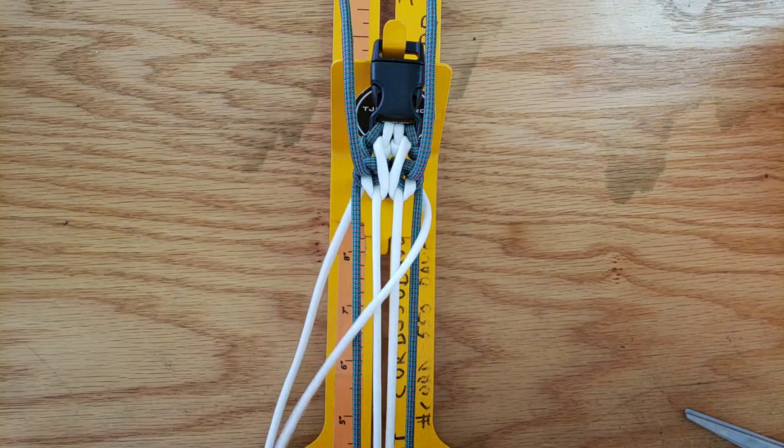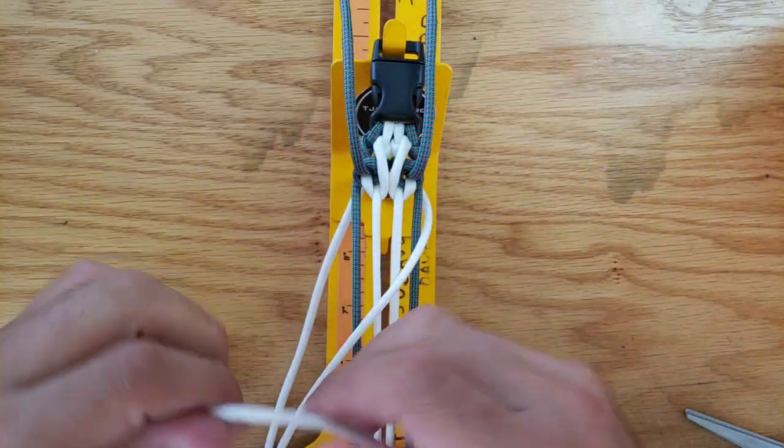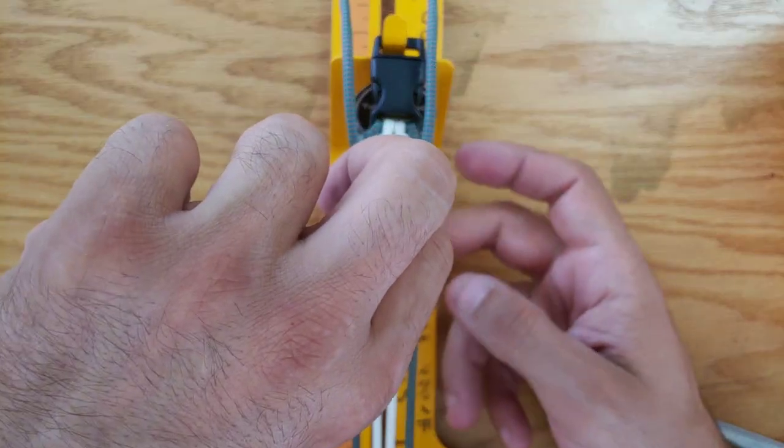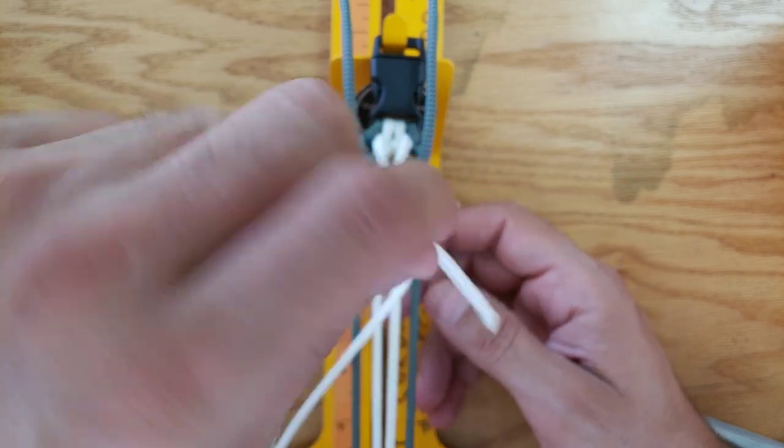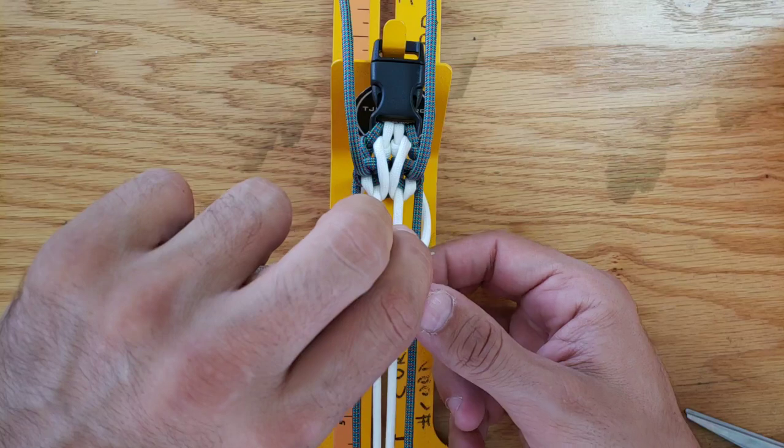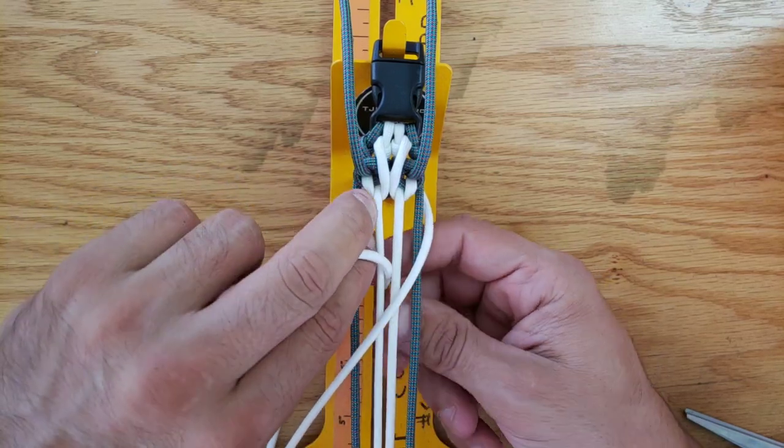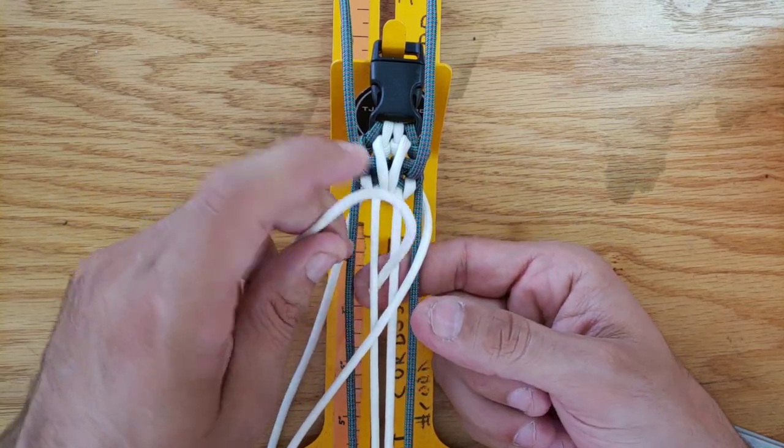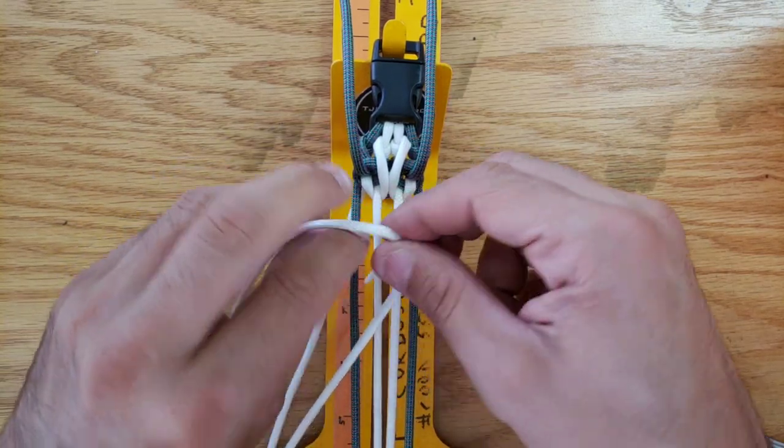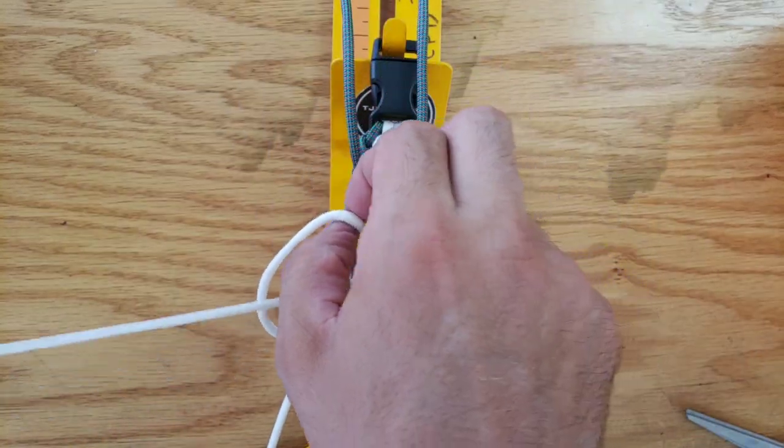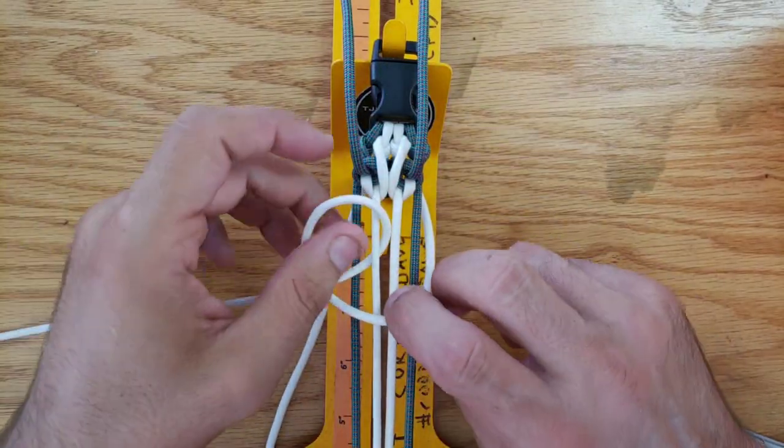Let's do this same thing again. Bring your cords over. Take your right cord down through between cords two and three and right back up between cords one and two. It's just an easy in and out, creating like the letter E in your design.